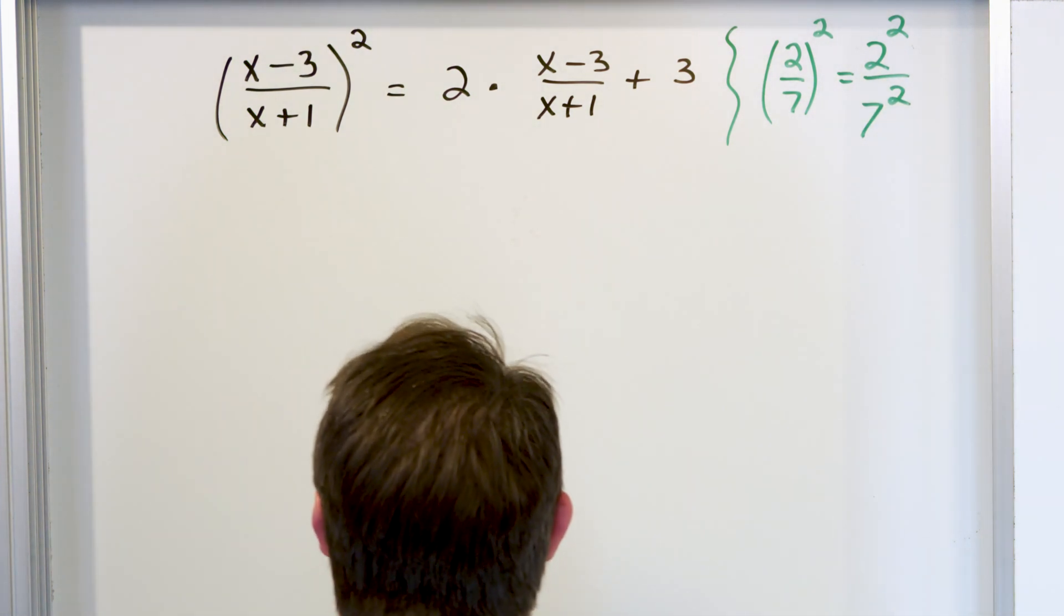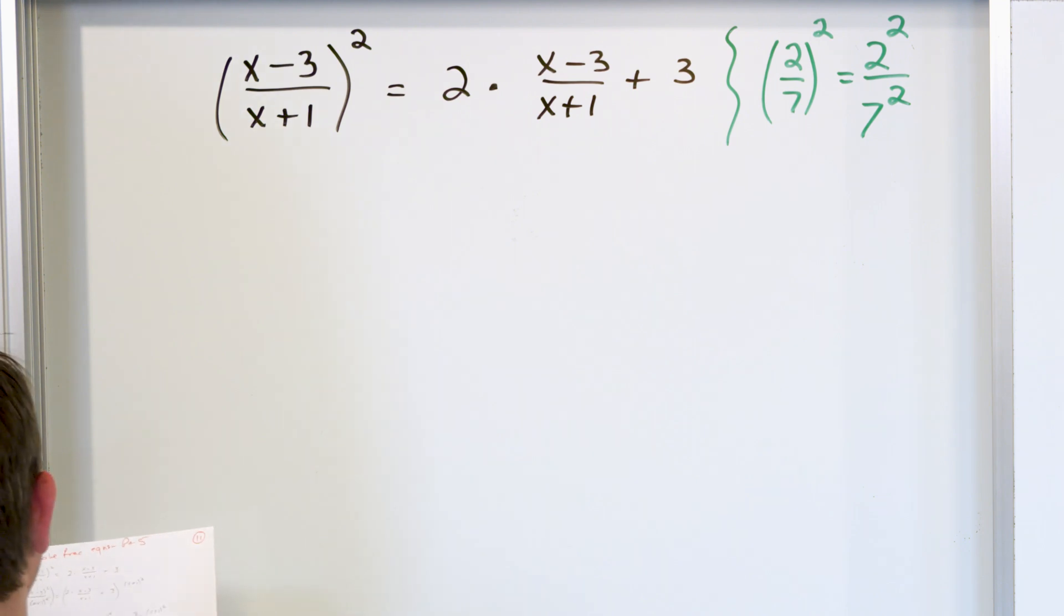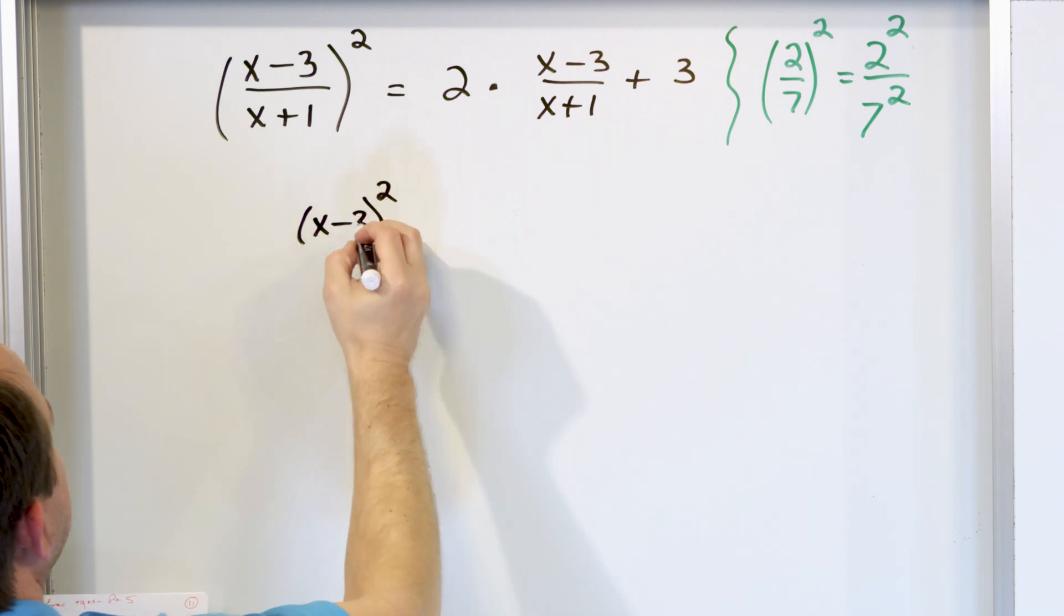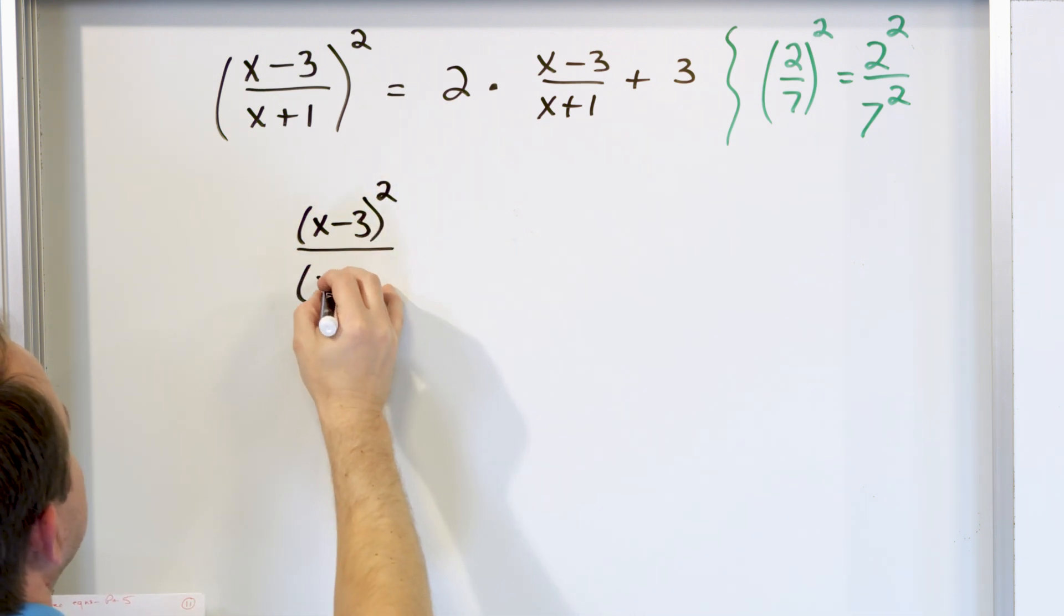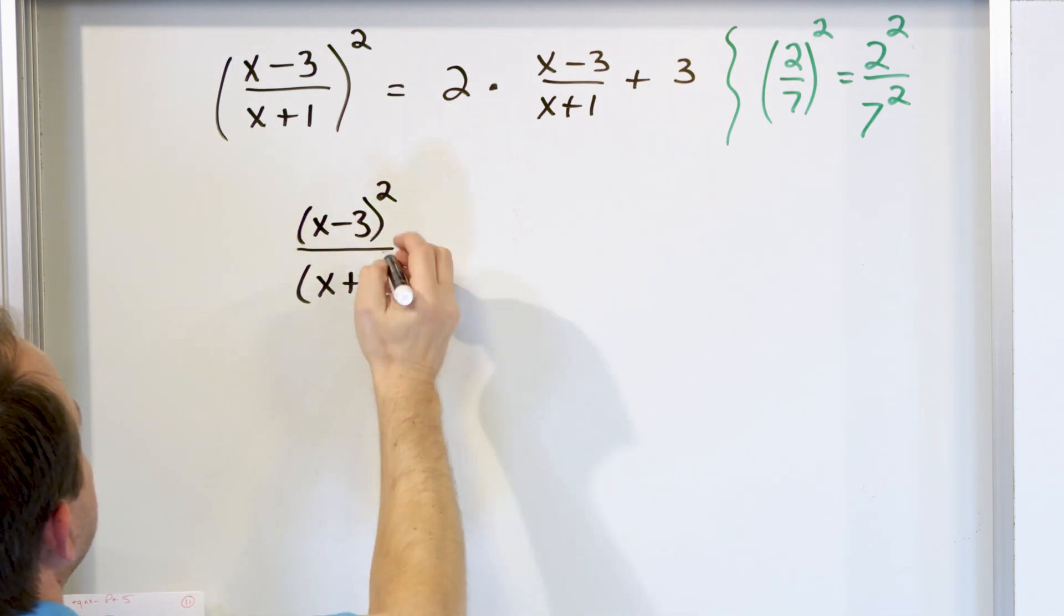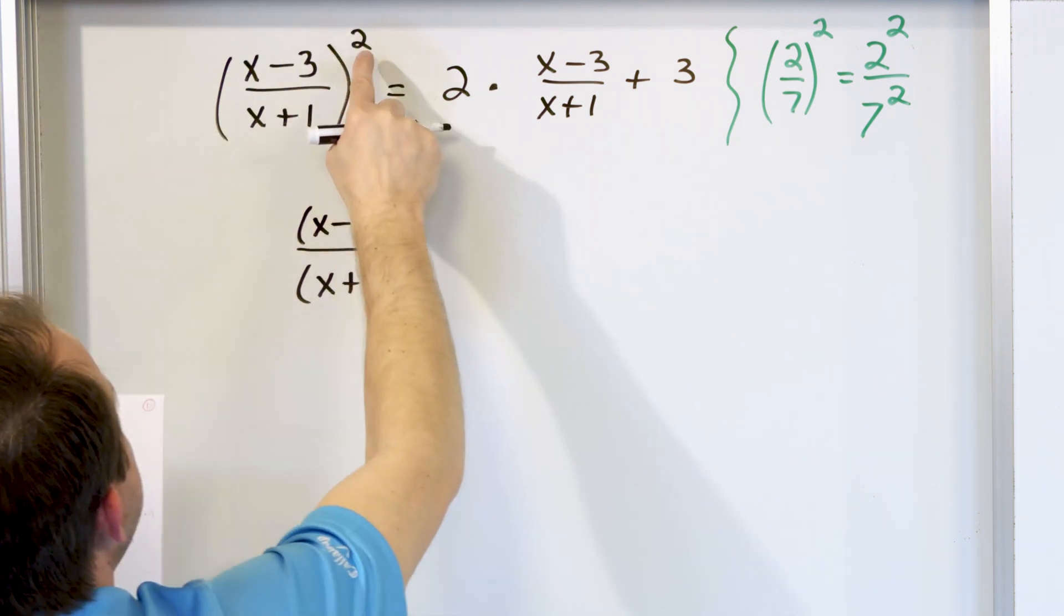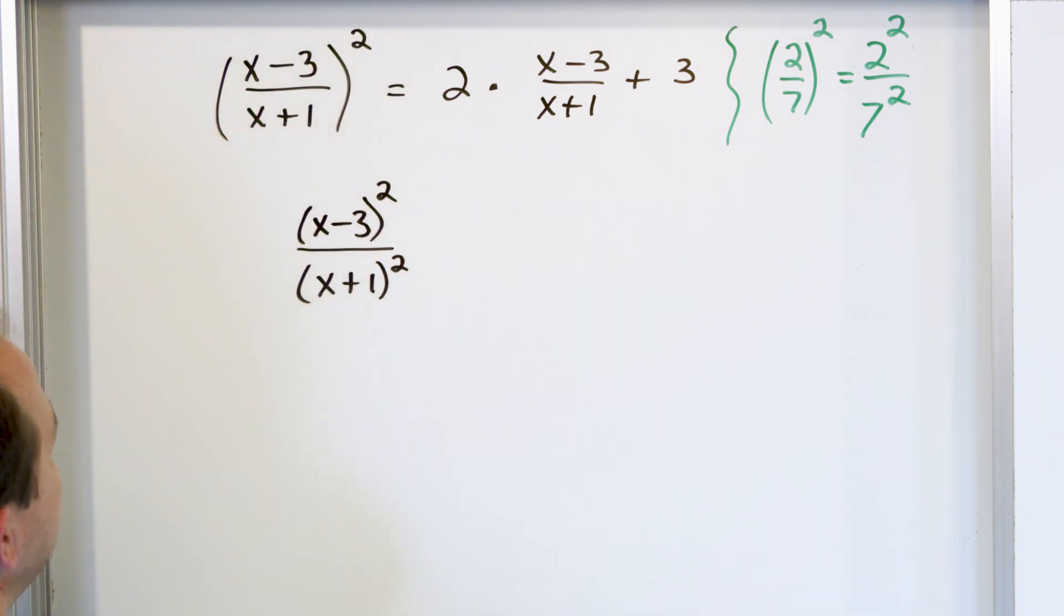And that's going to make this thing easier to deal with, because if you apply that rule to this situation, what you're going to then have is (x-3) as a quantity squared, and on the bottom, you'll have to wrap it up as (x+1) quantity squared. Exponent applies to the top as a quantity. Exponent applies to the bottom as a quantity.